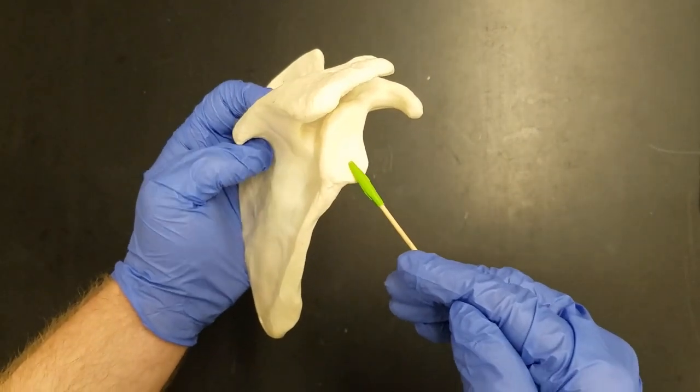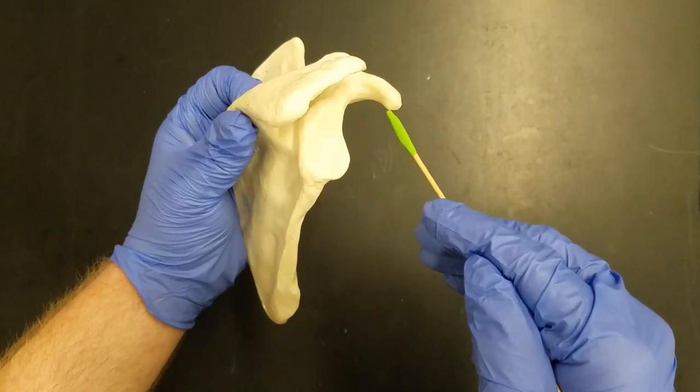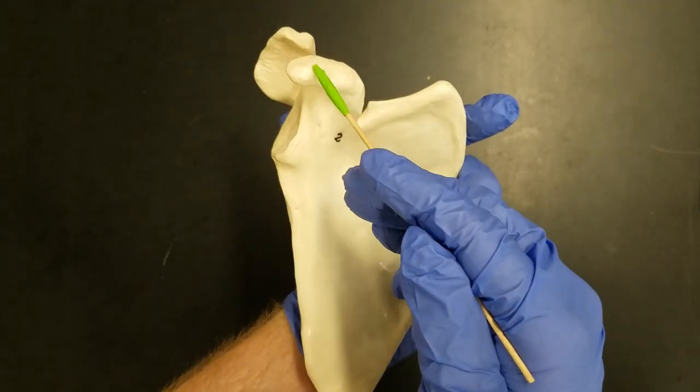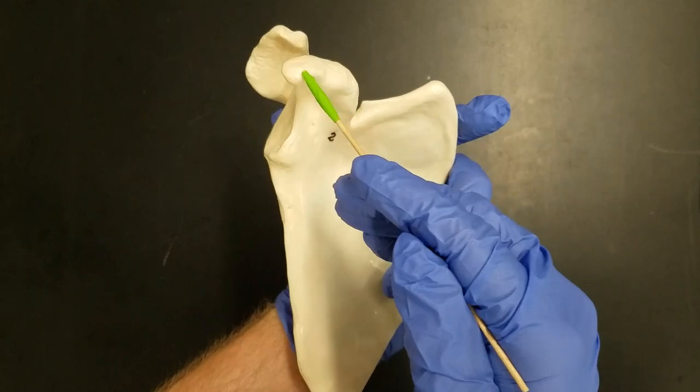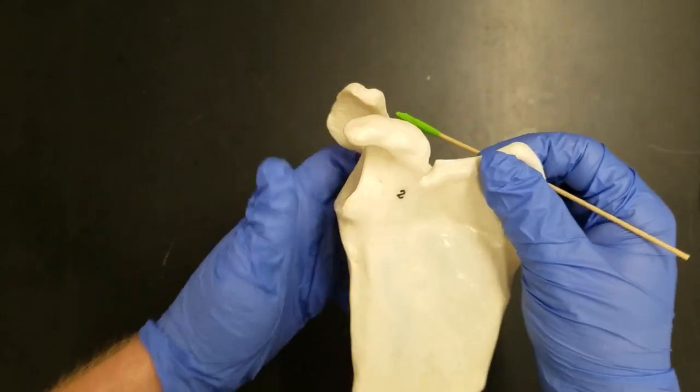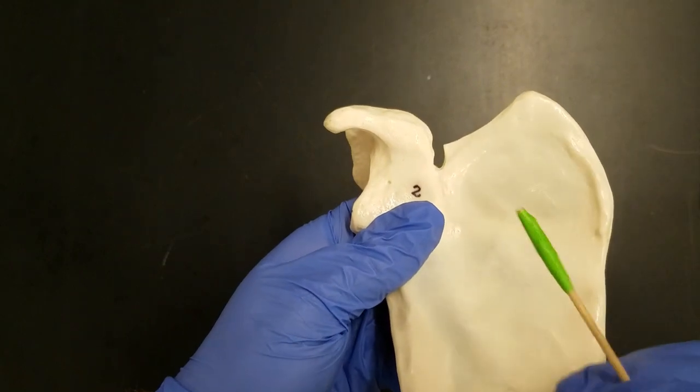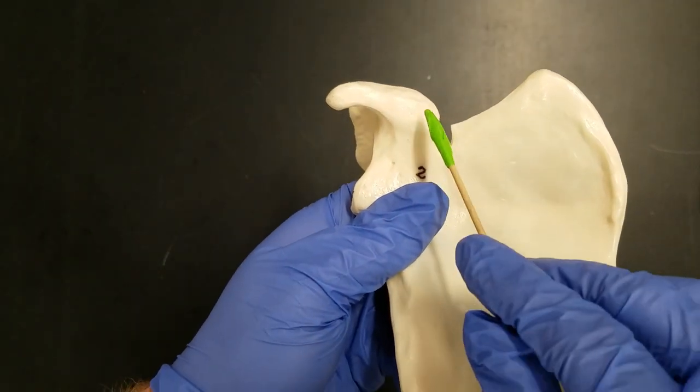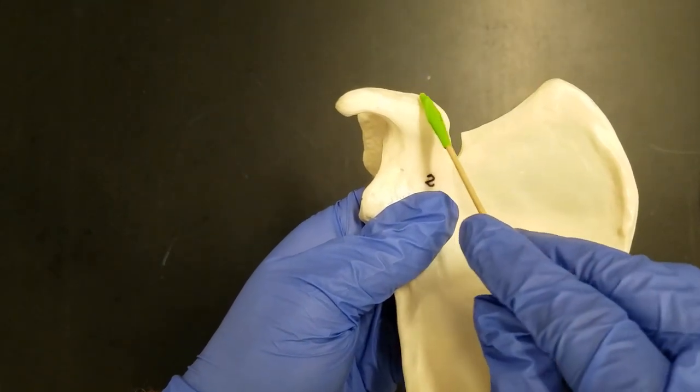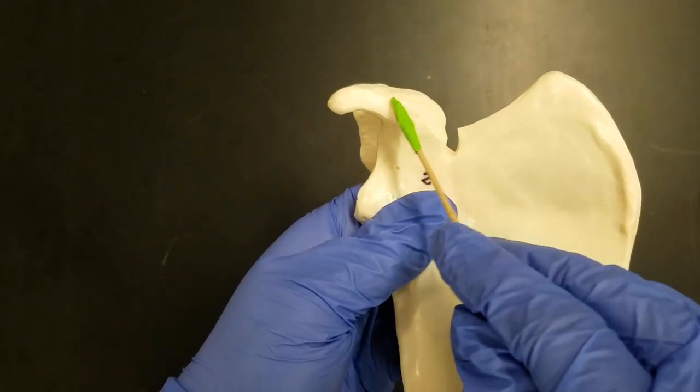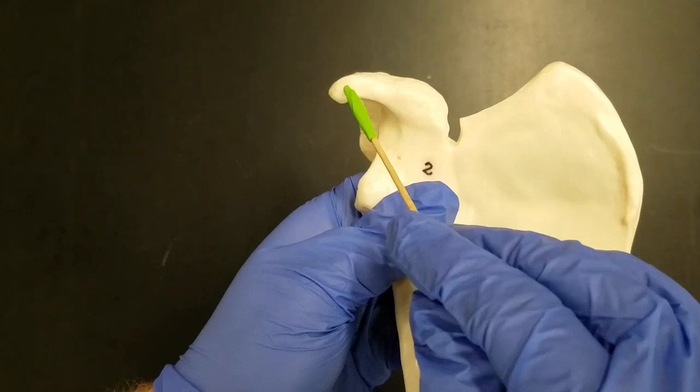Above our glenoid, we have this weirdly shaped process that sticks out. This is called the coracoid process. Corax in Greek means crow, and so if you look at this projection, here's the head of the crow, and then here's the beak of the crow. You can kind of see it does look like a bird's head.